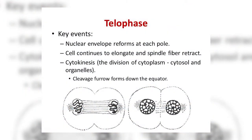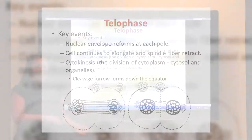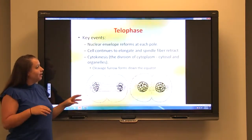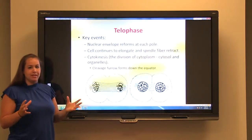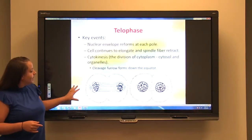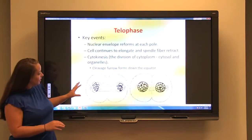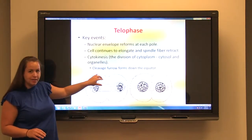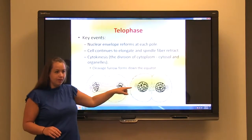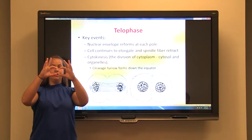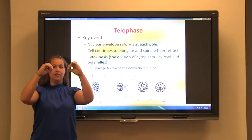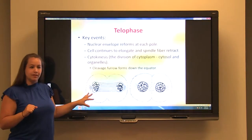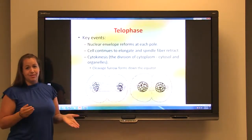The last phase of mitosis is telophase. During this time, events occur that are the complete opposite of prophase. Once the chromosomes reach their designated pole, they begin to unwind back to chromatin. The nuclear envelope reforms around them to create two separate nuclei. The spindle fibers continue to elongate the cell while retracting from the genetic material. This elongation creates an area between the two nuclei known as the cleavage furrow, where the plasma membrane comes closer and closer together until it touches and two cells are pinched off. The process of dividing up the cytoplasm is known as cytokinesis, which runs hand in hand with telophase.